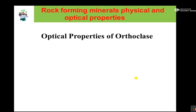Rocks or minerals are determined based on three methods. The first is using physical properties, the second is optical properties, and the last and most accurate method is geochemistry. If you are confused in the field identifying minerals using physical properties, you should come to the laboratory and make thin sections and examine them under a microscope. If still confused, use geochemistry for accurate identification.